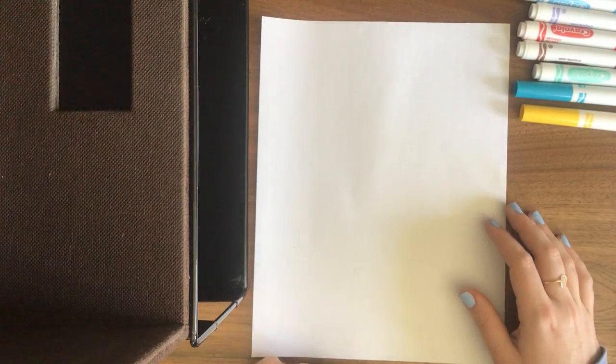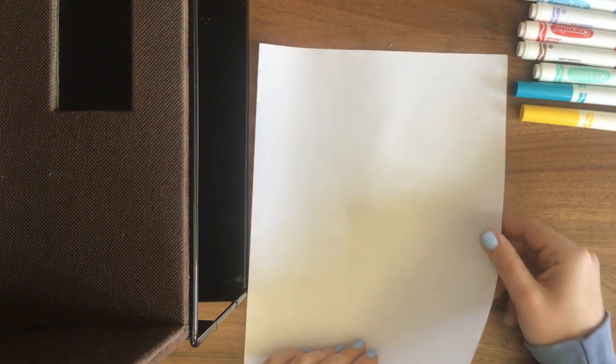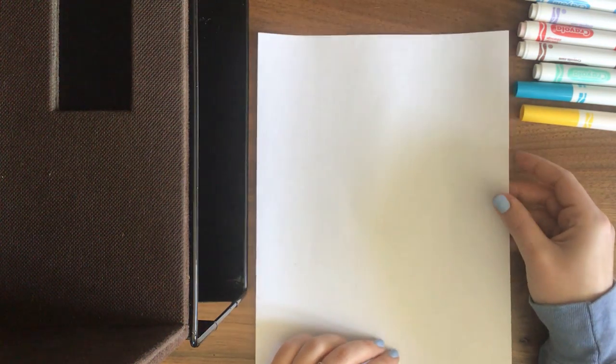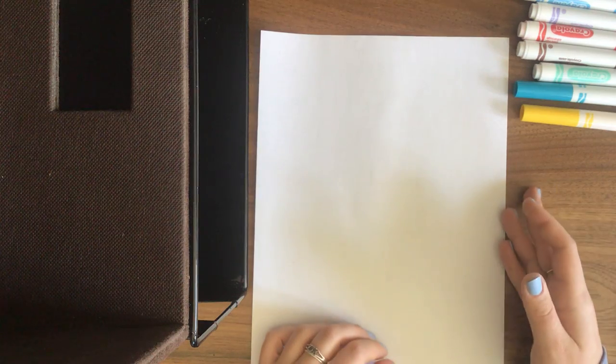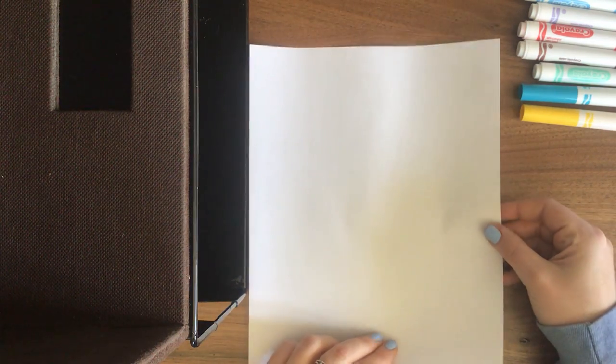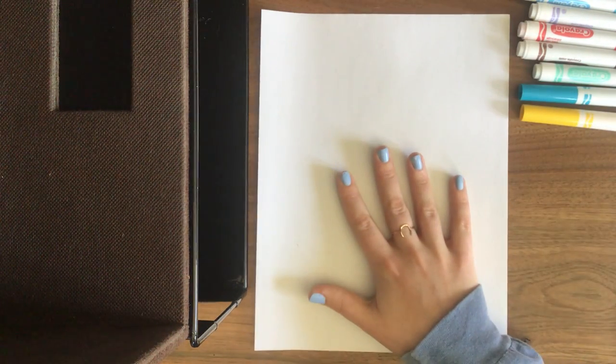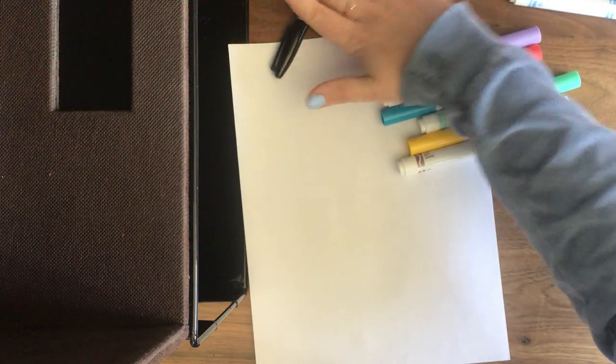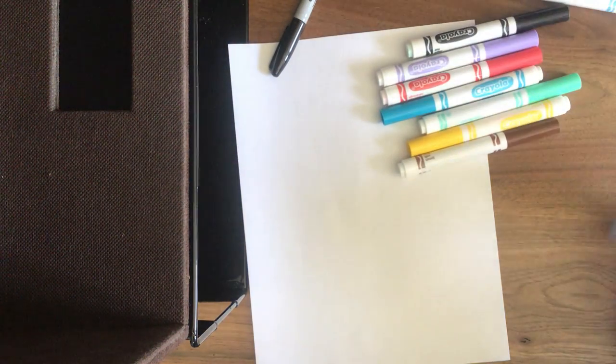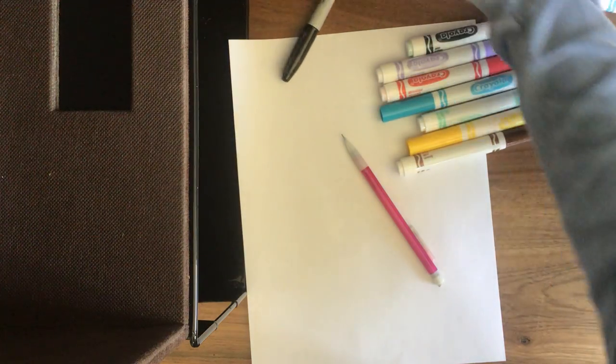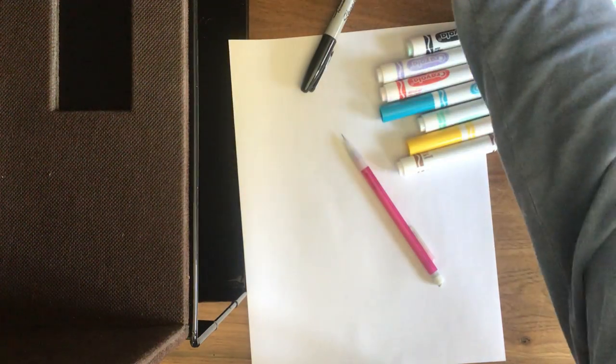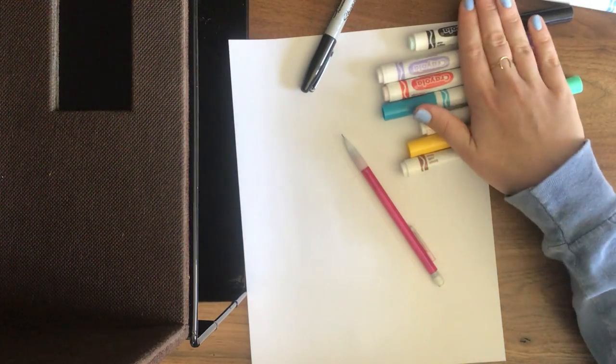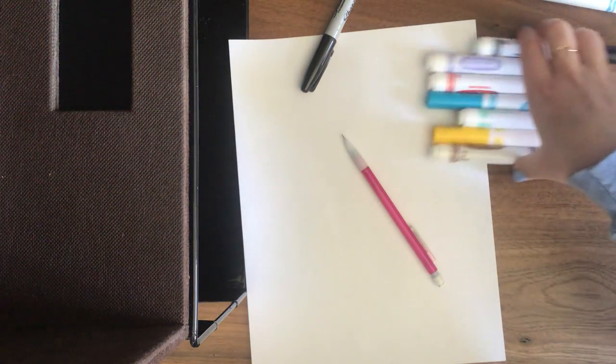So the materials that you need are listed on your art classroom but I'm going to show you now. So you can pause at any time to get ready. I just have a printer piece of paper, markers, a sharpie which you do not need if you do not have it, and a pencil. You can also use crayons or any coloring tool. You don't have to use markers, I just like to use markers best.